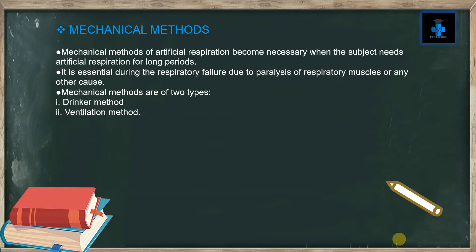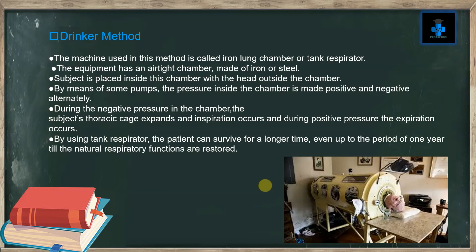Mechanical methods of artificial respiration become necessary when the subject needs artificial respiration for longer periods. They are essential during respiratory failure due to paralysis of the respiratory muscles or any other cause. Mechanical methods are of two types: number one, the Drinker method; number two, the ventilation method. The machine used for the Drinker method is called the iron lung chamber or tank respirator.